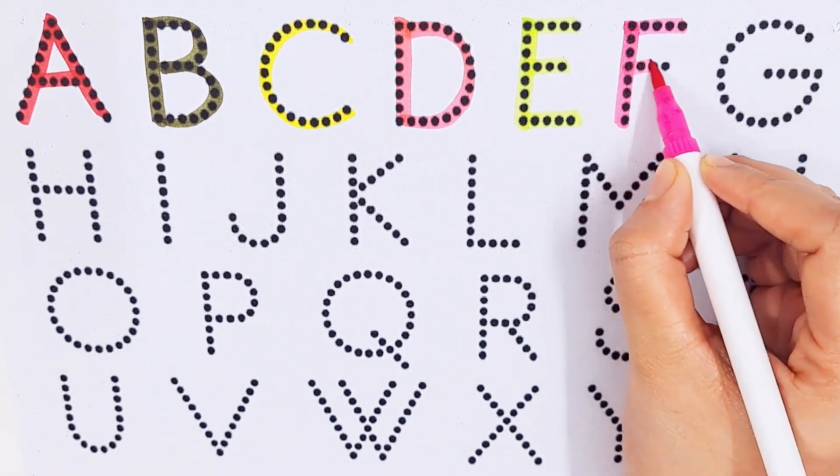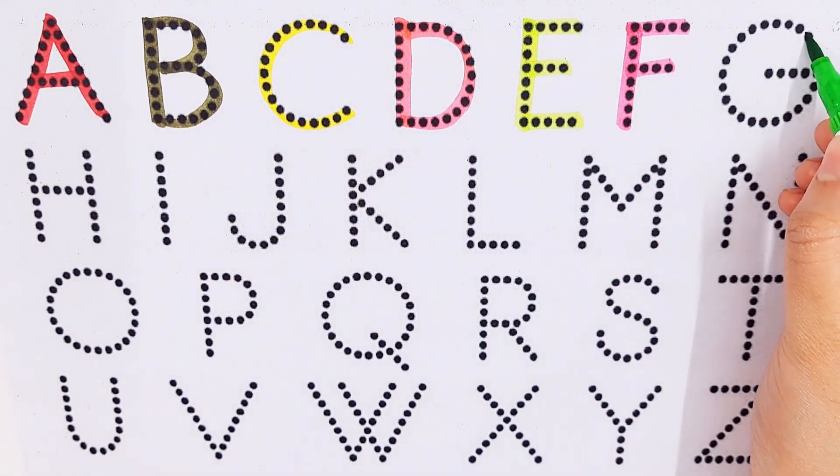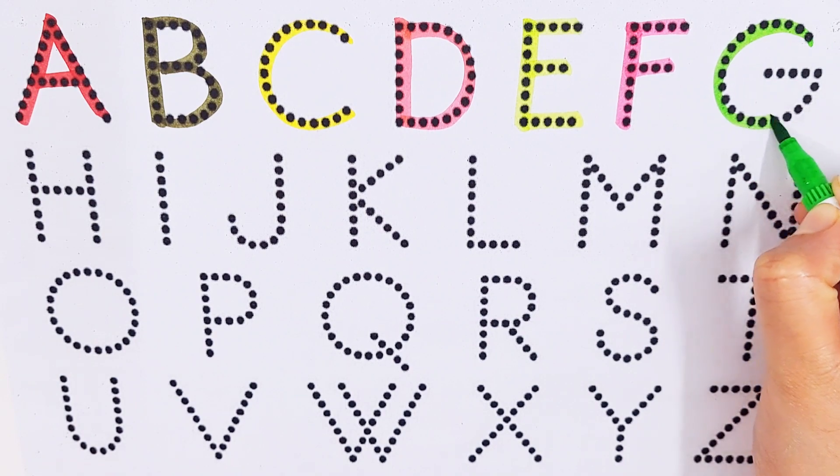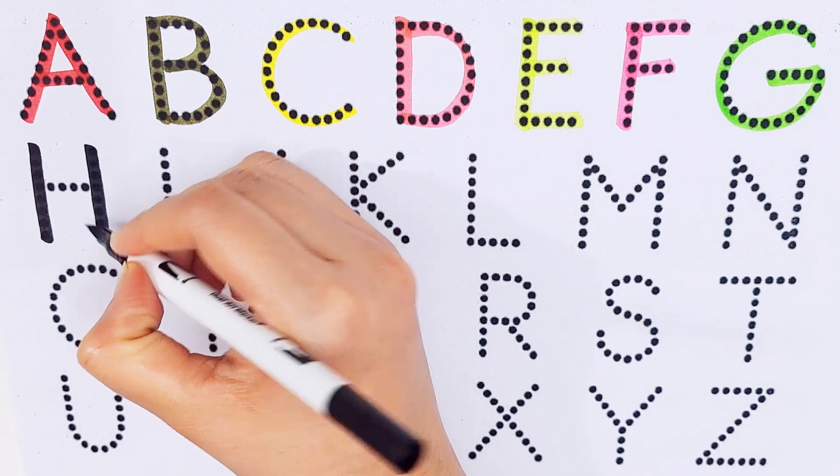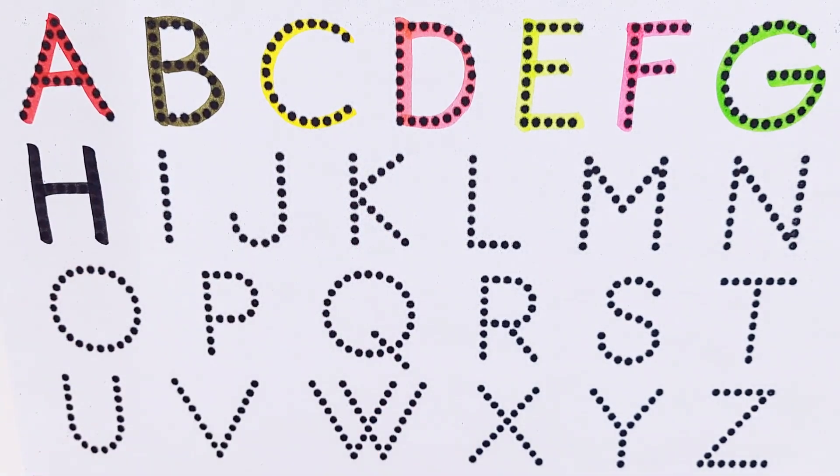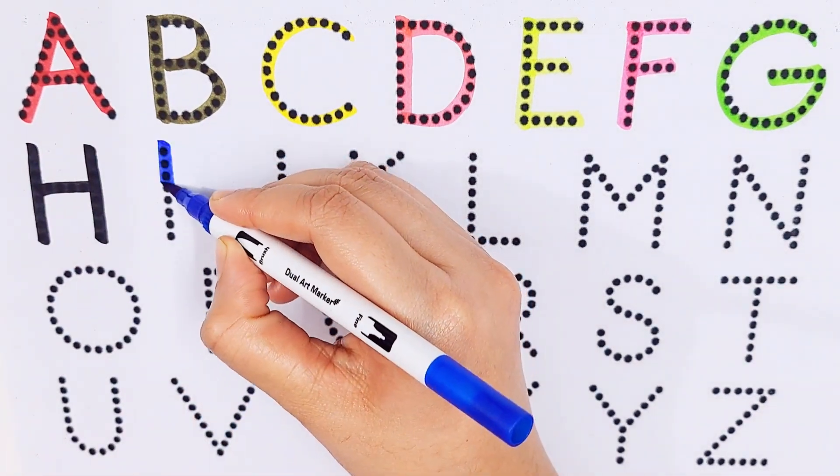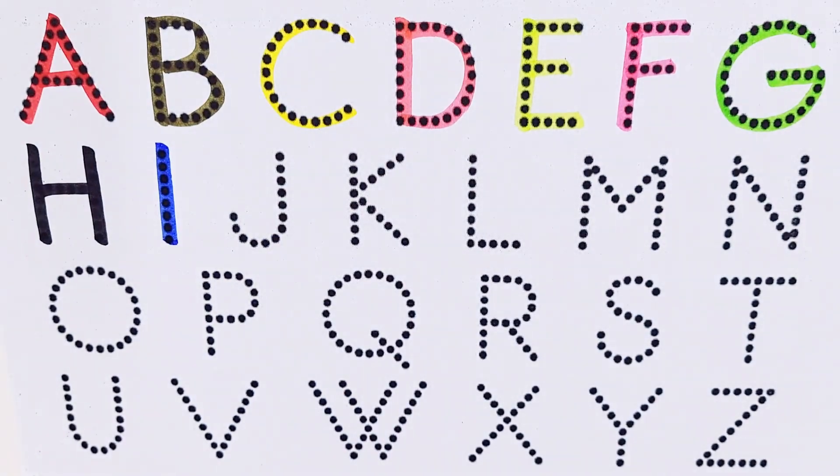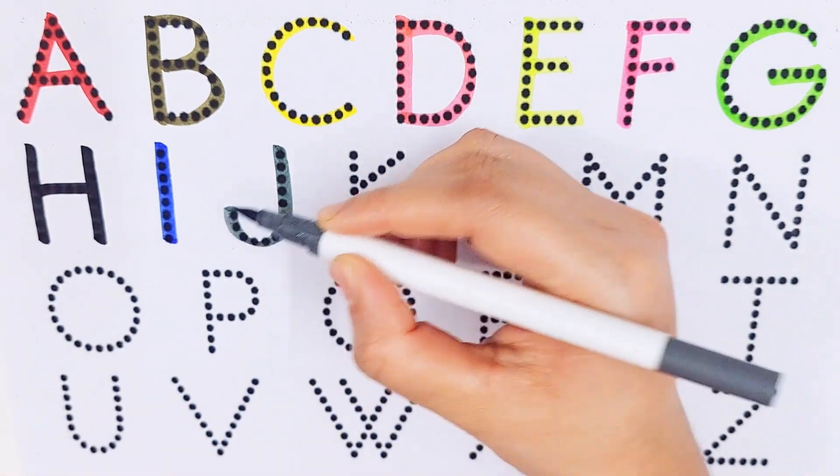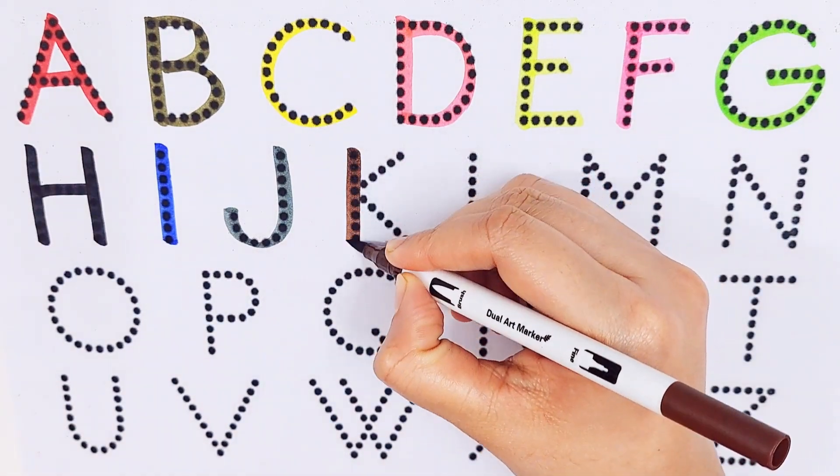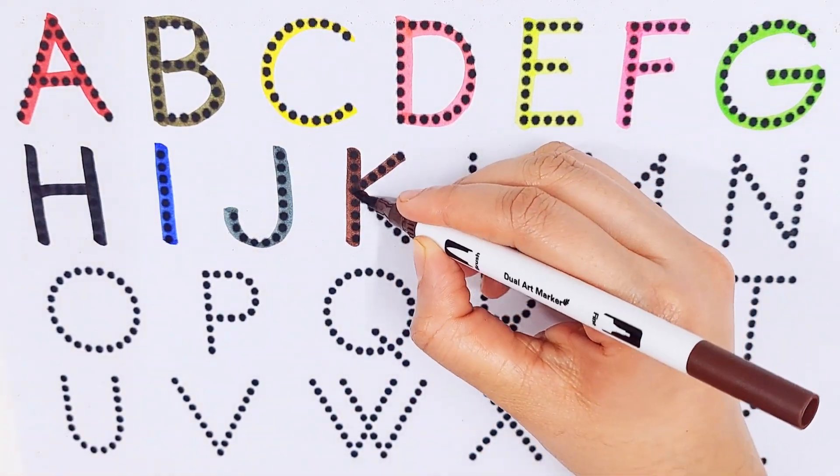F for flowers. G, g for goat. H, h for hair. I, i for ice. J, j for jar. K, k for kids.